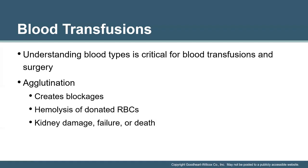If someone gets the wrong blood type, that creates a severe response called an agglutination reaction, where an antigen-antibody complex forms. The antibodies floating within the patient will attack the foreign antigen that's been introduced. Blood transfusions go beyond simple typing — they make you wait because there are factors beyond this that cannot always be regulated or predicted, and sometimes a body would reject blood that according to our charting should work. There are factors we cannot always know are present.